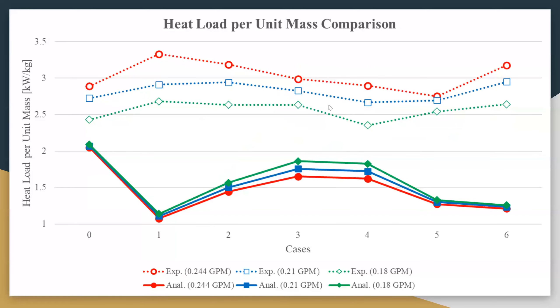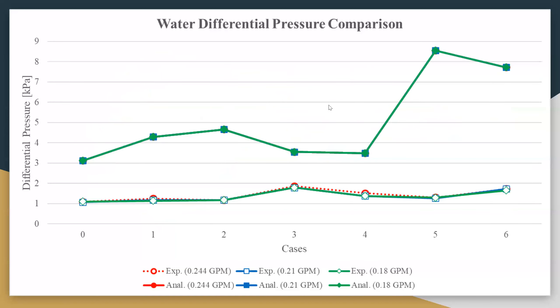The same trend follows for the heat load per unit mass comparison. This graph shows the differential pressure, and there's a sharp change in configurations 5 and 6 because the cross flow part is in the first half, which roughly changed the velocity profile and decreased the pressure.